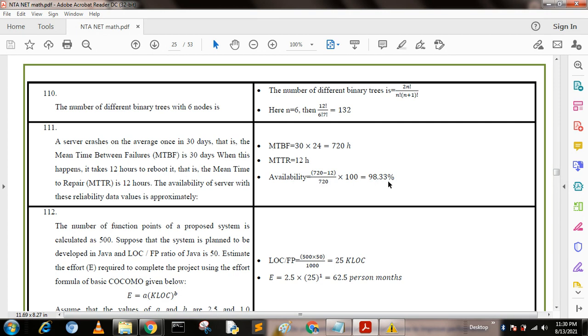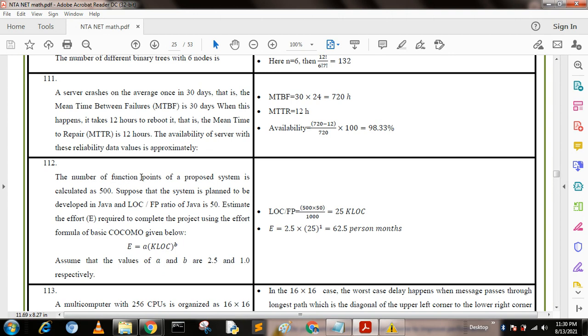Next question: The number of function points of a proposed system is calculated as 500. Suppose the system is planned to be developed in Java, where the lines of code per function point ratio is 50. What is the estimated effort required to complete the project using the effort formula from basic COCOMO? E equals a times KLOC to the power b. Assume that the value of a is 2.5 and b is 1.0. To calculate, we find LOC divided by FP equals 500 times 50 divided by 1000 equals 25 KLOC. We put the values: E equals 2.5 times 25 to the power 1.0 equals 62.5 person-months.